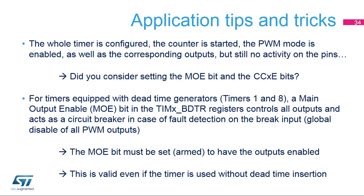This slide explains a common support case where the whole timer is configured, the counter is started, the PWM mode is enabled along with the corresponding outputs, but there is still no activity on the pins. Usually, this is because the MOE bit or the CCXE bit was not set. The CCXE bit in the TIMX CCER register defines the configuration of a CCX channel as input or output. The CC1E bit must be set to get a PWM signal on the CH1 channel.